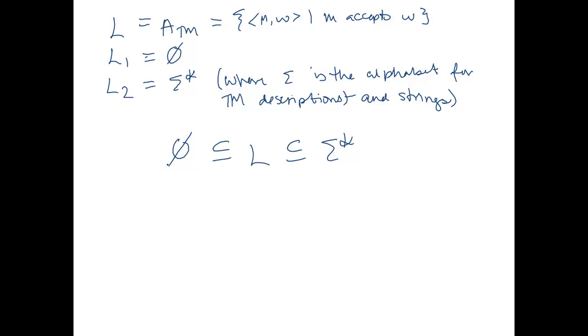So here we have L1, L, L2, and this relationship holds. To remind ourselves that L1 and L2 are decidable, we can construct DFAs. There's one for L1, and there's one for L2.